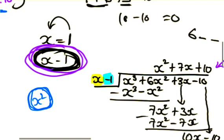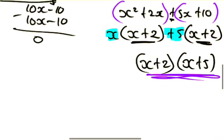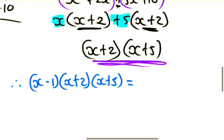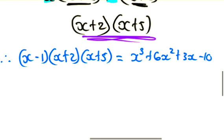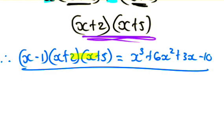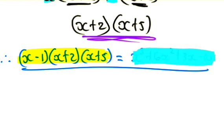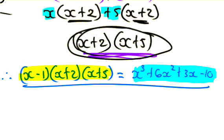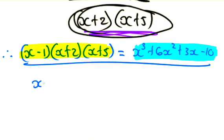Combining all our factors, the complete factorization is x minus 1 times x plus 2 times x plus 5. This equals x cubed plus 6x squared plus 3x minus 10.